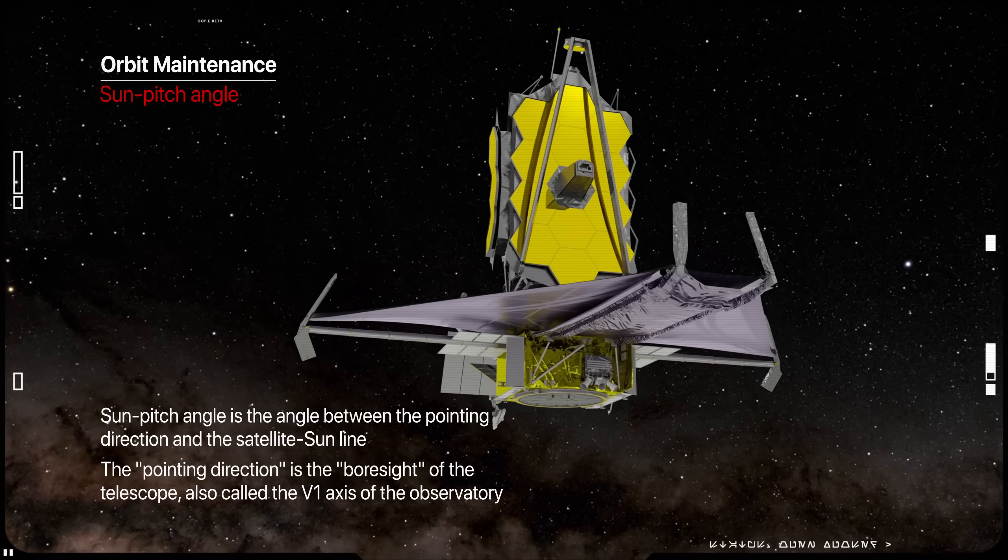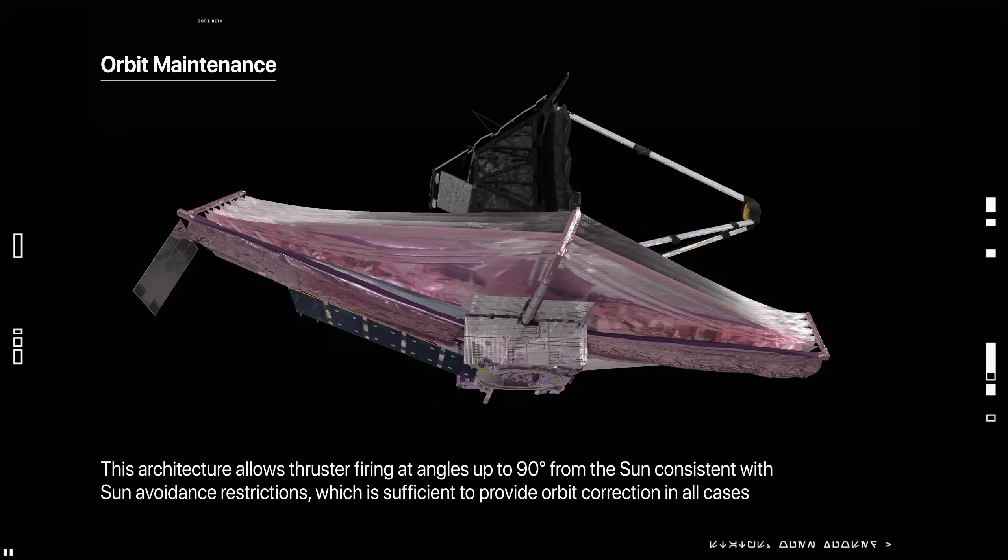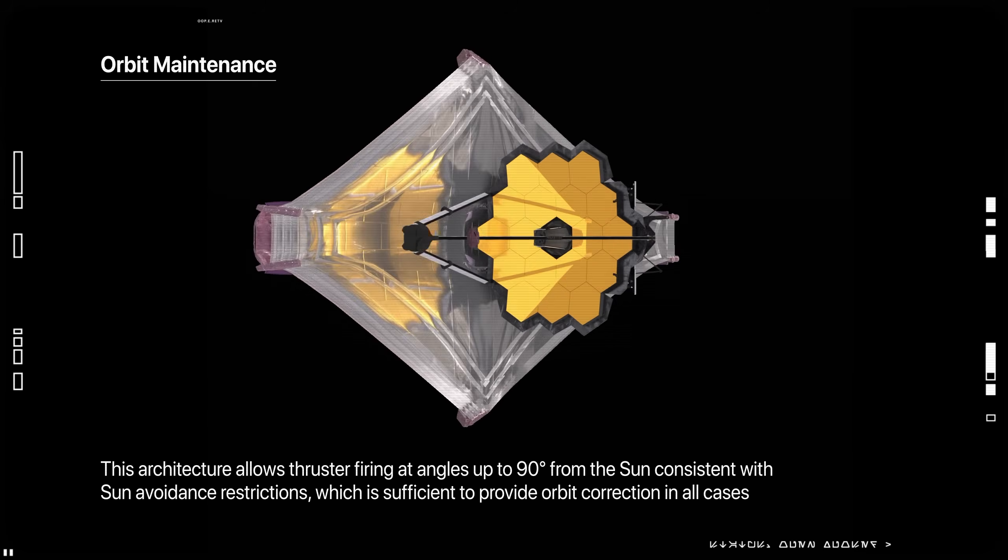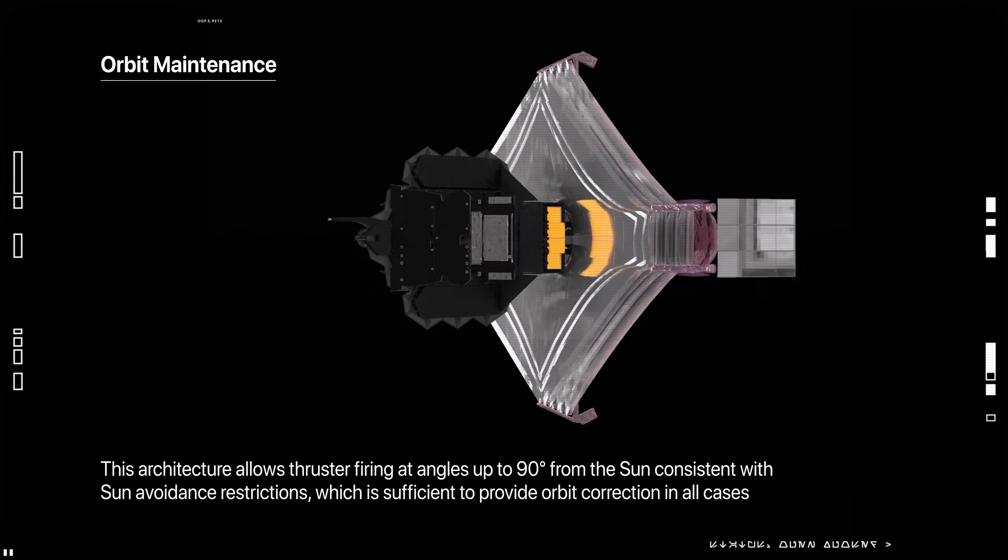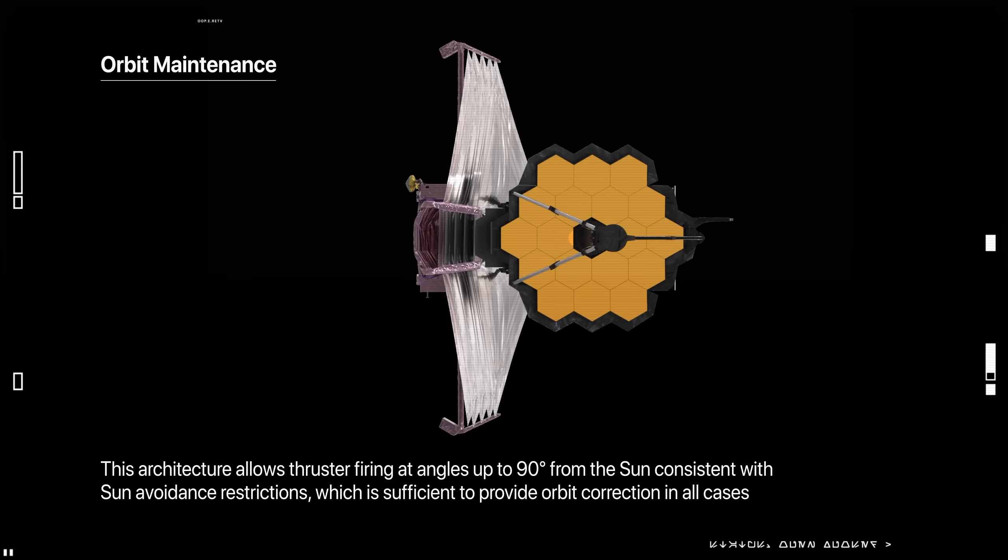This architecture allows thrusters firing at angles up to 90 degrees from the sun consistent with sun avoidance restrictions, which is sufficient to provide orbit correction in all cases.